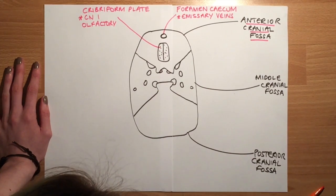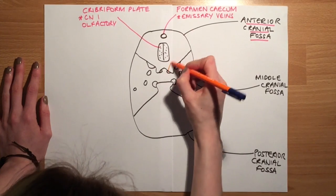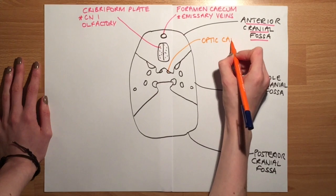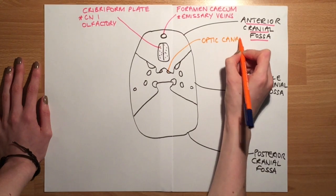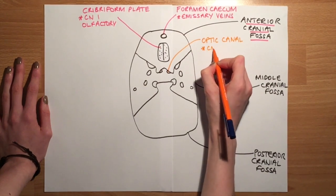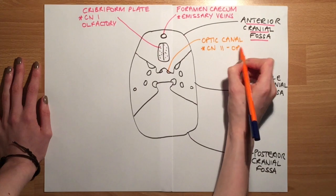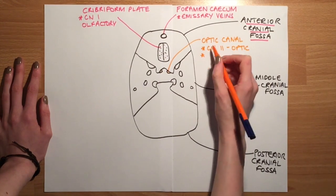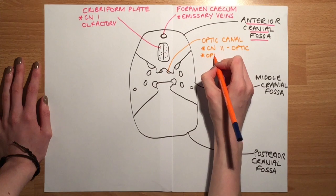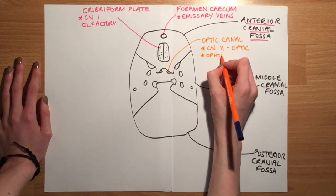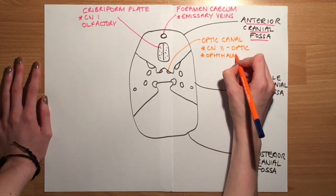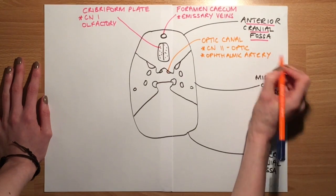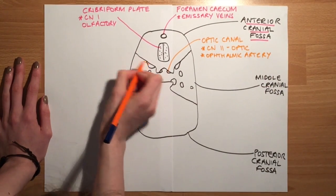First we are going to talk about the optic canal. The optic canal transmits two structures into the orbit: cranial nerve two, which is the optic nerve, and the ophthalmic artery. A good way of remembering that there are two structures is the fact that it's cranial nerve two — a hint that there are two structures.